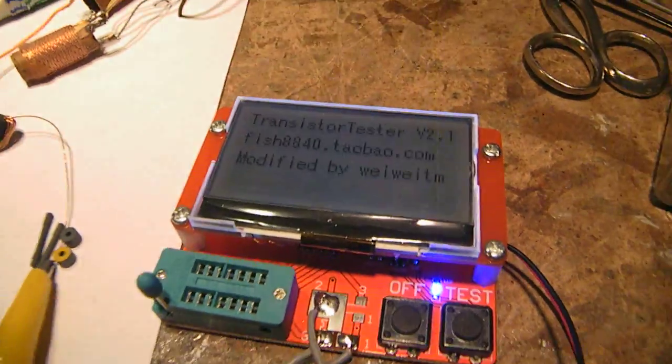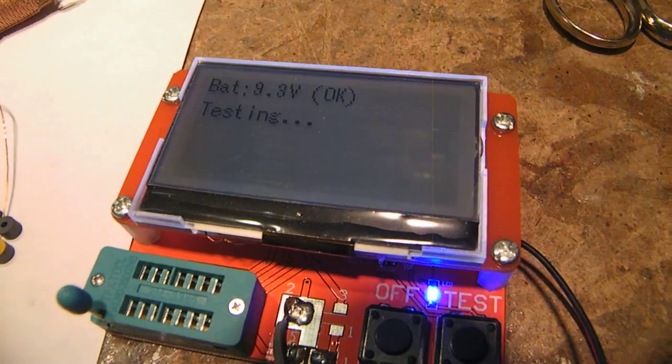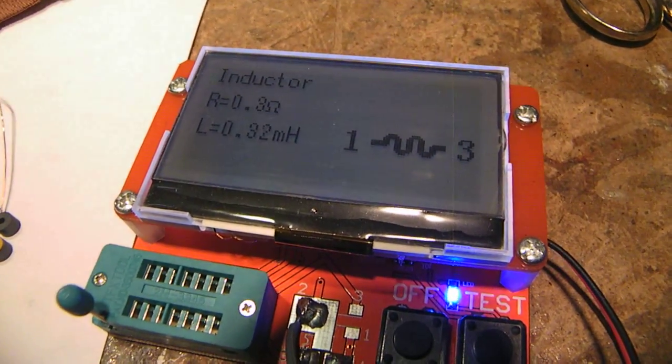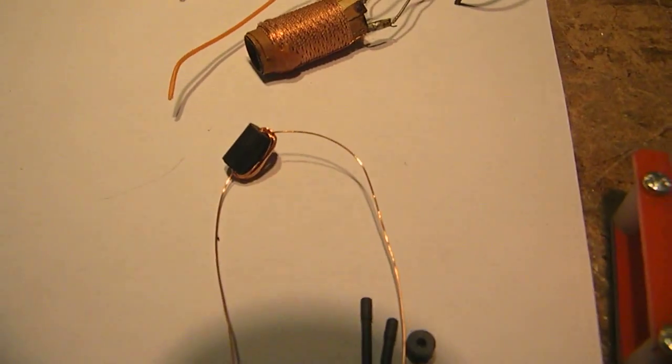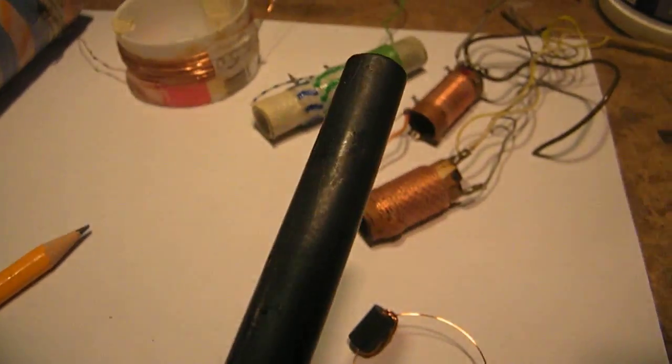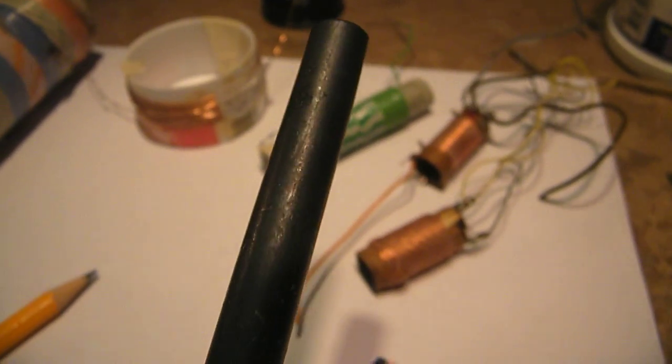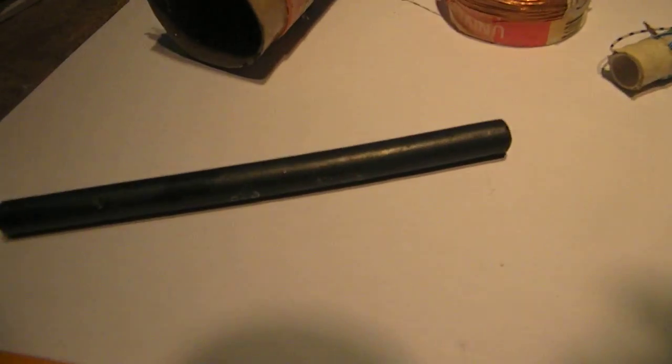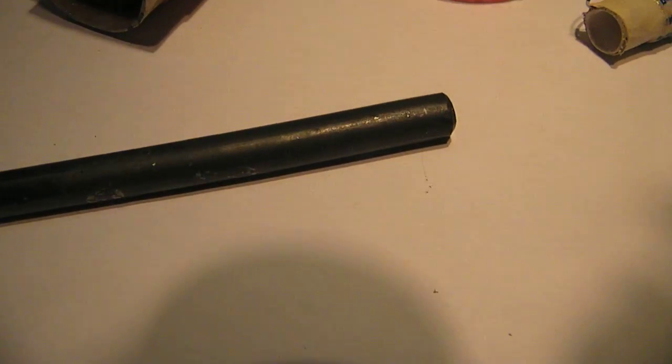So let's see what happens when we do some windings on a ferrite rod. And the inductance changes substantially and it gets a much more high inductance.